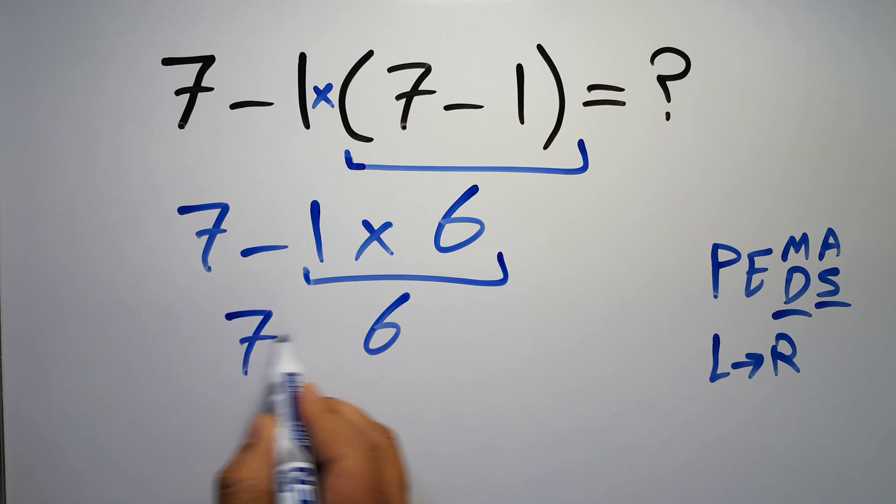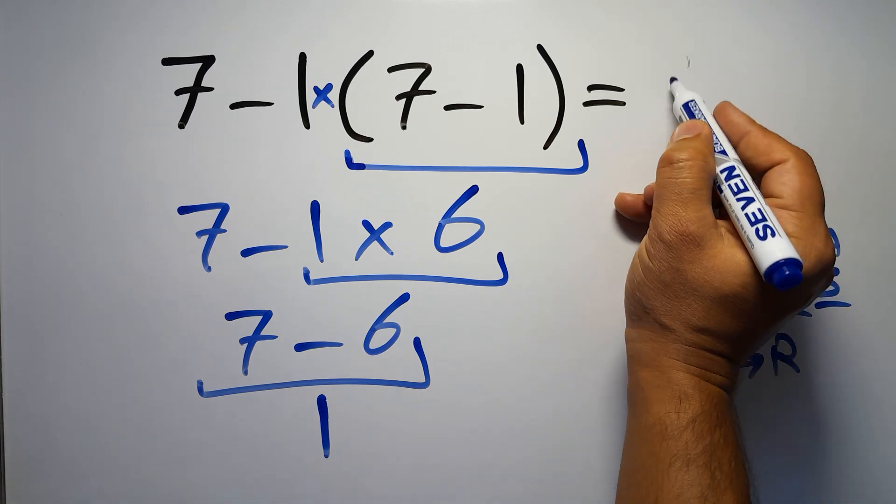So 7 minus 6 which equals 1, and this is our final answer to this problem. The correct answer is 1.